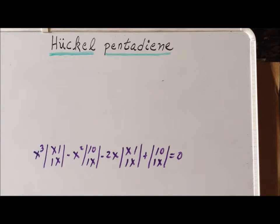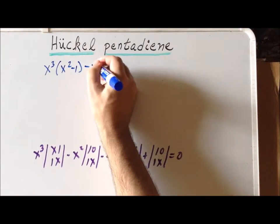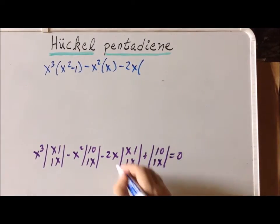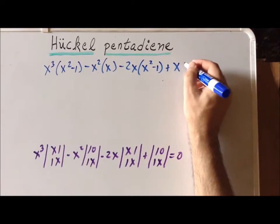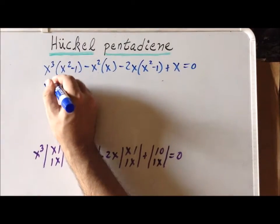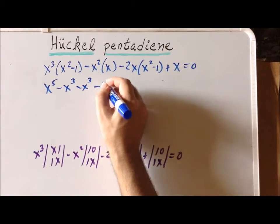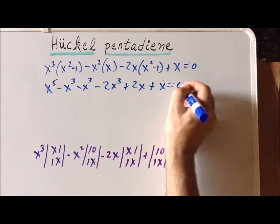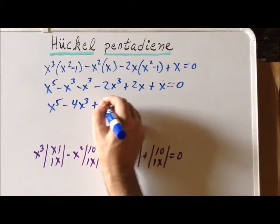Since all determinants are now 2x2, we can evaluate them directly. This gives x cubed times (x squared minus 1) minus x squared times x, minus 2x times (x squared minus 1), plus x, all equal to zero. Expanding: x to the fifth minus x cubed minus x cubed minus 2x cubed plus 2x plus x equals zero, which simplifies to x to the fifth minus 4x cubed plus 3x equals zero.